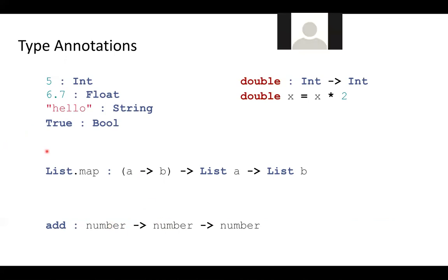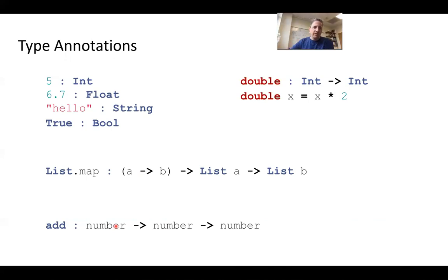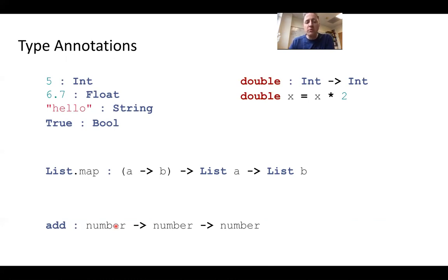Student question: Does this mean that somewhere else in the program you have to define number equals int, or does it mean the A's need to match but we're not defining specifically what they are? It is the second. We never define what number is — this is a type variable. We're saying the add function takes two things of the same type and will return a third thing of that type. That information is something the compiler can use to type-check a program, but it's weaker than a C-style annotation where you need a specific type. We would never define number — it's a type variable and holds for all types.